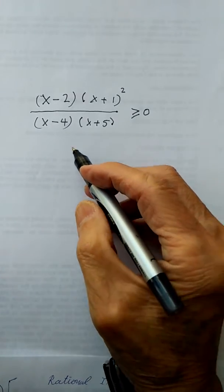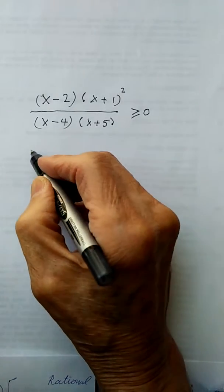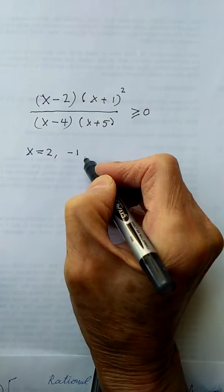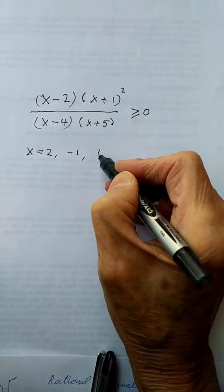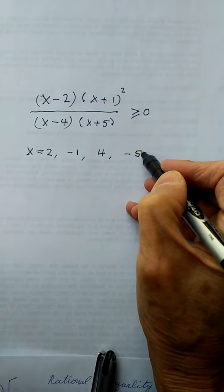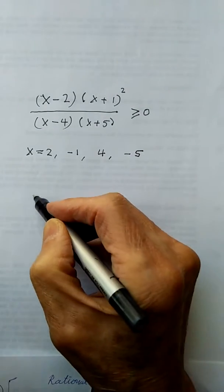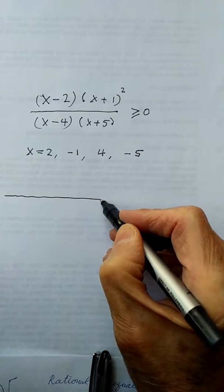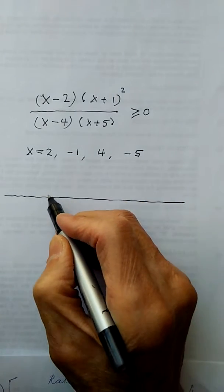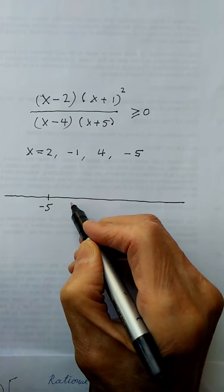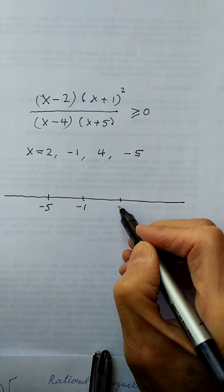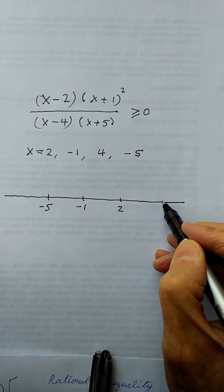As before, I find the zeros: x equals 2, x equals negative 1, x equals positive 4, x equals negative 5. Draw a number line and mark down all the zeros: negative 5, negative 1, 2, and 4.